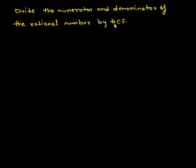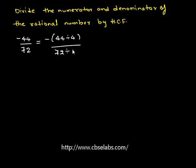So the rational number we have is negative 44 upon 72. This is equivalent to minus of 44 divided by 4, which is the HCF, upon 72 divided by 4. Now 44 by 4: 4 times 11 is 44, so this gives 11.